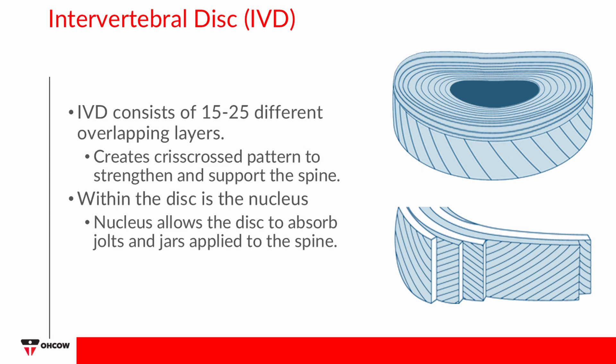If we did not have the discs, the vertebrae would not be able to move. The intervertebral disc consists of 15 to 25 different layers of tissues known as annular fibers, collectively referred to as the annulus fibrosis, arranged in an alternating crisscross pattern that provides strength and support. This crisscross design contains the nucleus material within and allows the disc to withstand the jolts and jars that arise when you move your spine. Within the annulus at the center of the disc is the nucleus, made up of a gelatinous substance which is mostly water when discs are young and healthy. As we get older, we lose some of that water, which shrinks the disc and decreases its ability to function like a shock absorber.